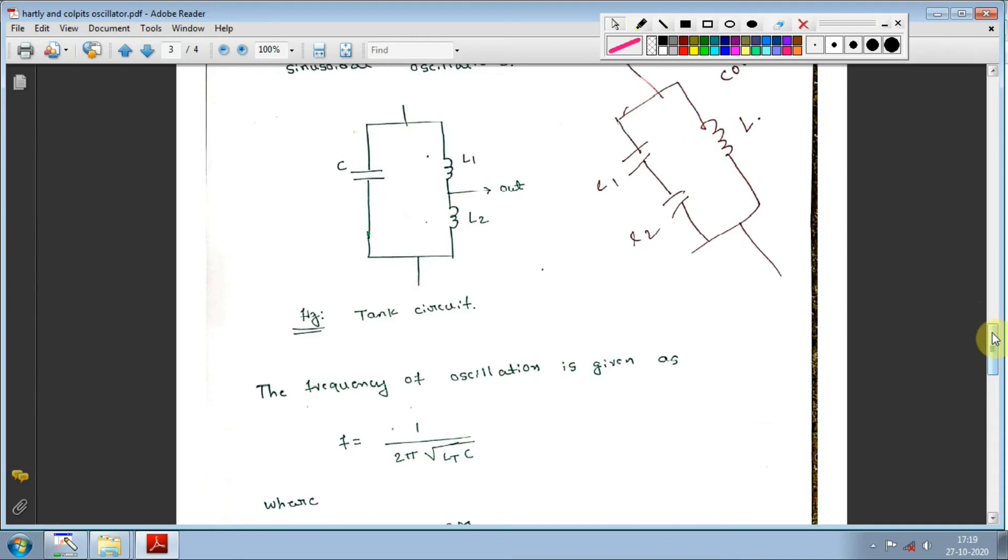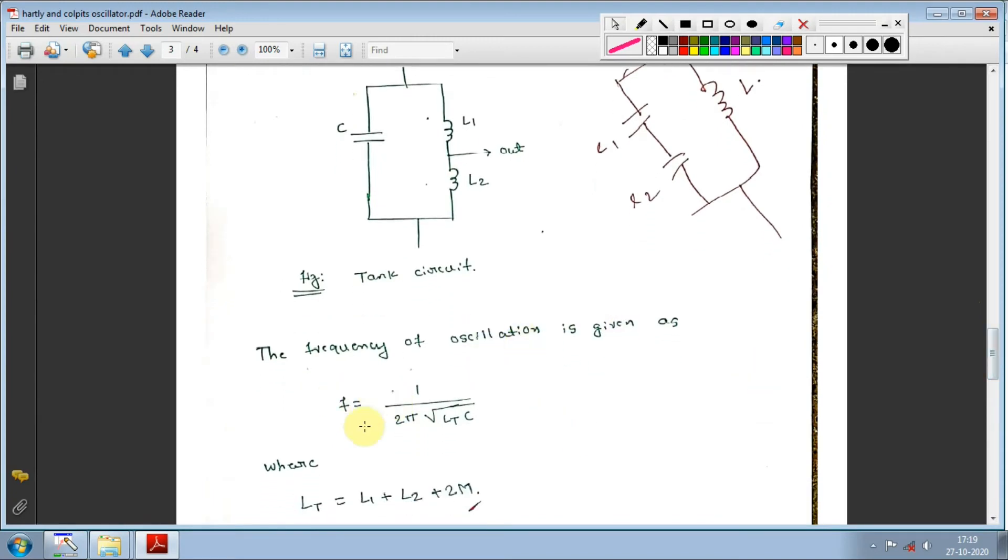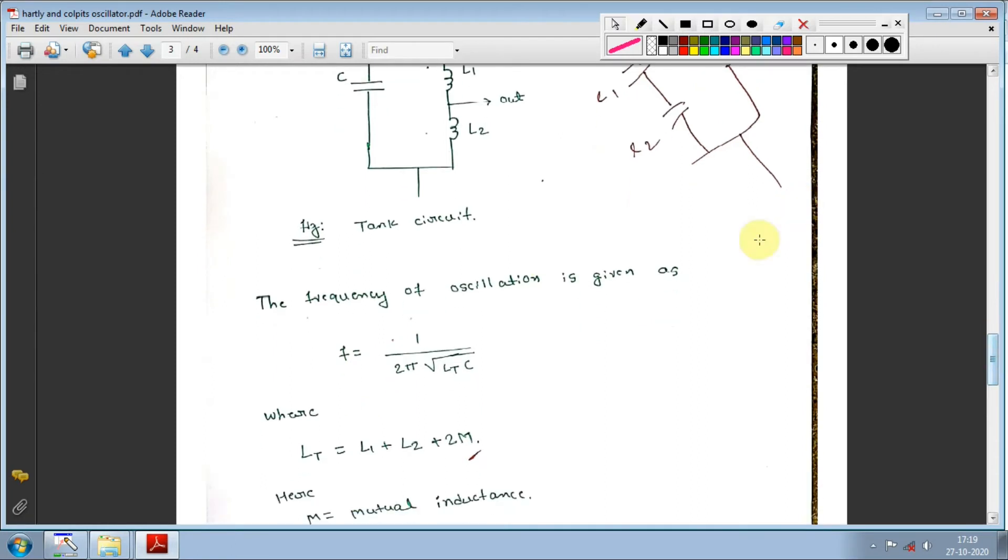The frequency of oscillation is given by f = 1/(2π√LtC), where Lt is the total inductance. For capacitors in series, you need to find the total capacitance. If you're following my videos, you should remember the formula. You can write it in the comments - is it the product or addition of C1 and C2?